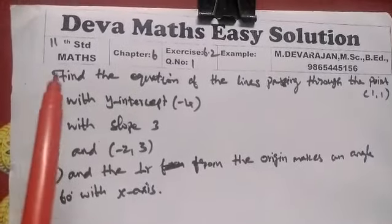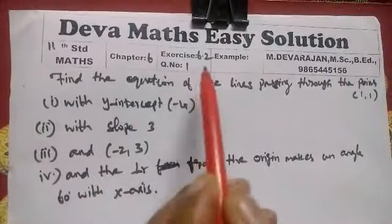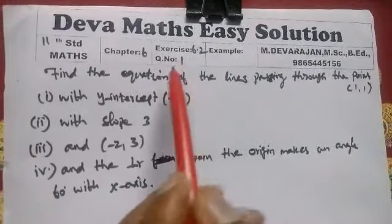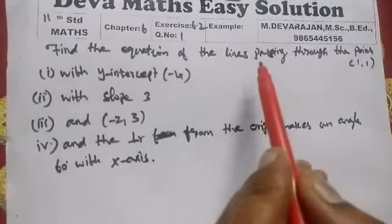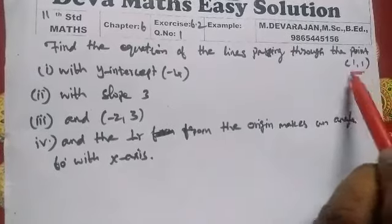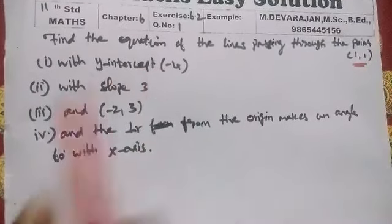Hi students, this is Deva. Now we are going to see Launch and Maths Chapter 6, Example 6.2, Question 1. Find the equations of the lines passing through the point (1,1) with y-intercept -4.